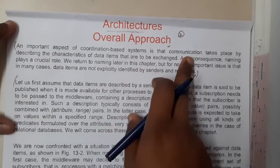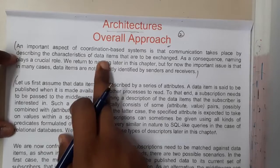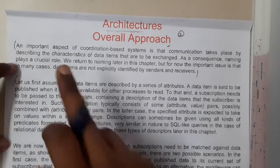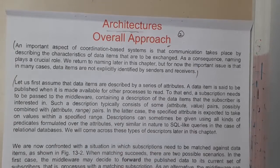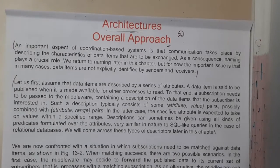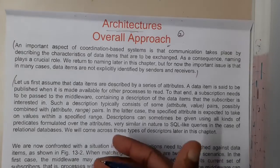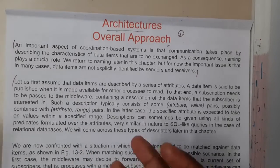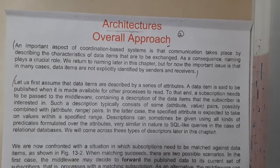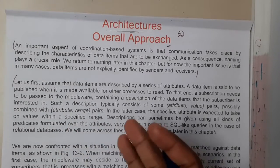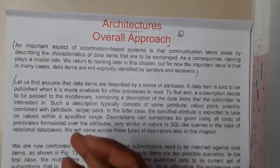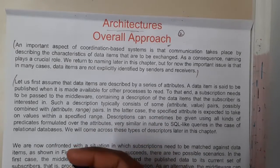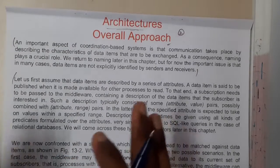An important aspect of coordination-based systems is that communication takes place by describing the characteristics of data items that are to be exchanged. As a consequence, naming plays a crucial role here. For example, assume you want to buy a book on distributed systems. You need to know the book name along with the author name. If you say 'Distributed Systems: Principles and Paradigms by Tanenbaum,' you will get the exact book you want. So you must know the name and identity to get things easily — that same concept is used in coordination systems.